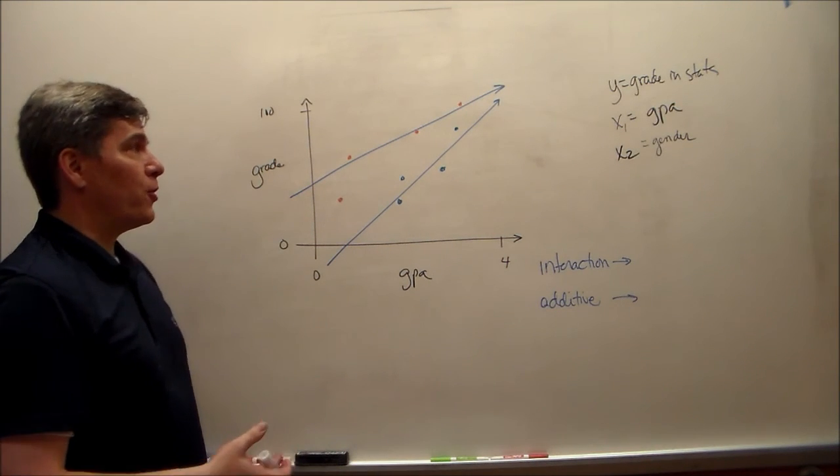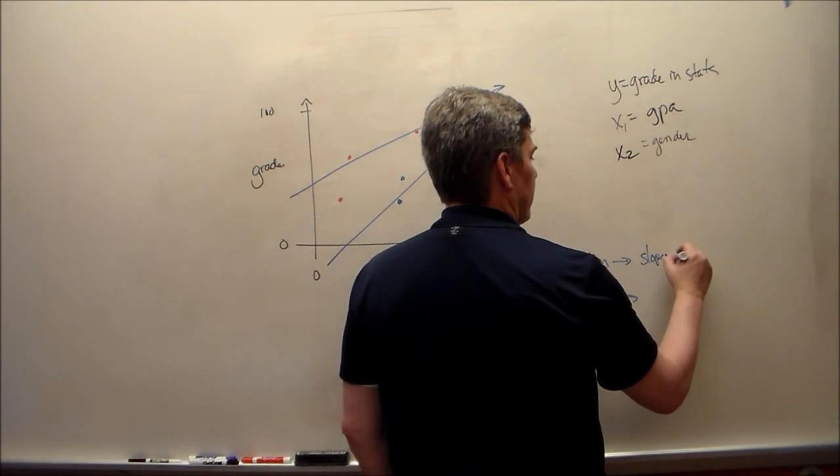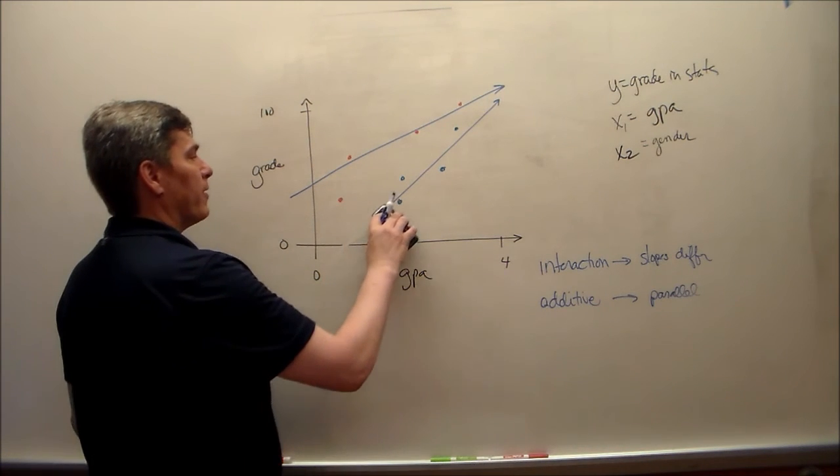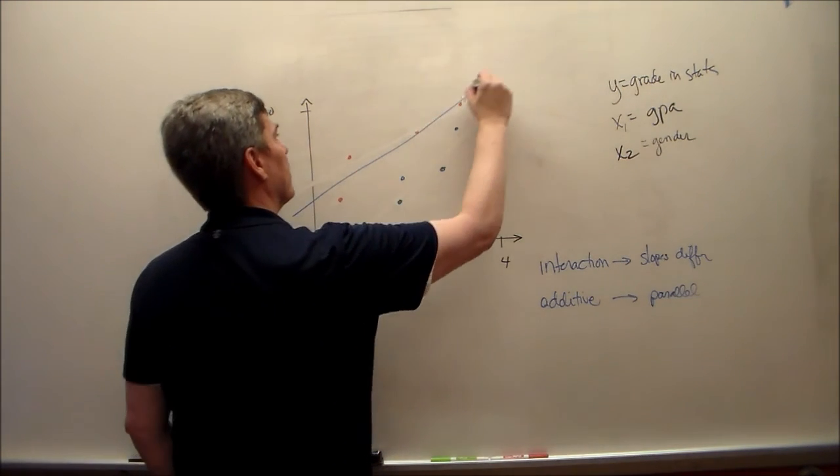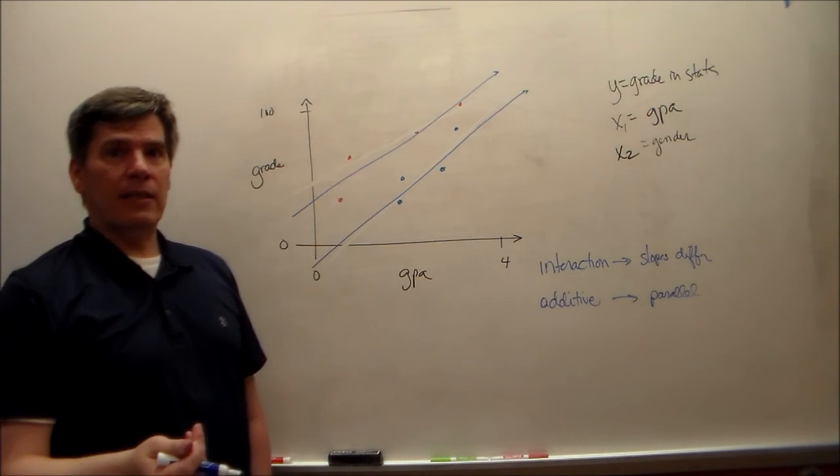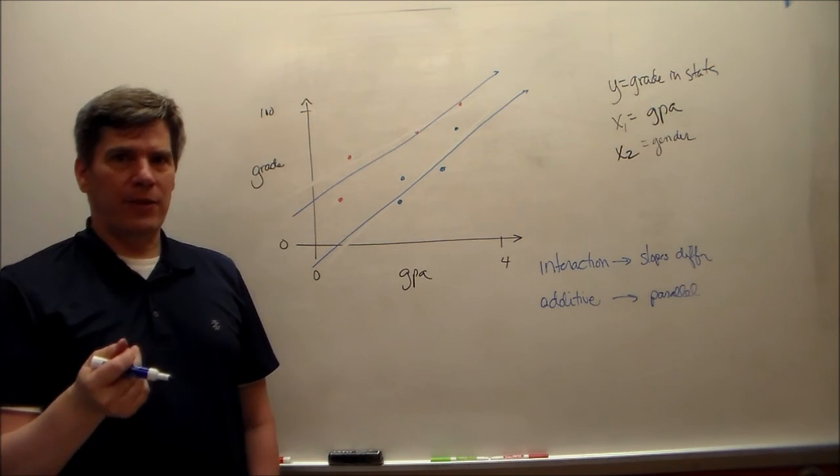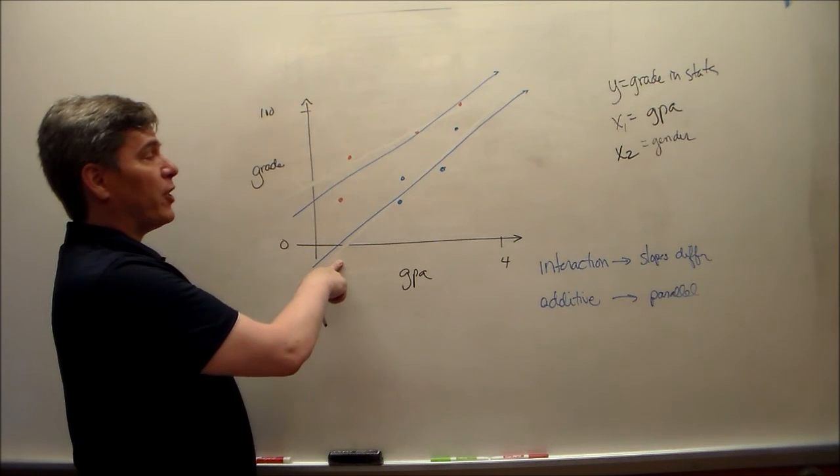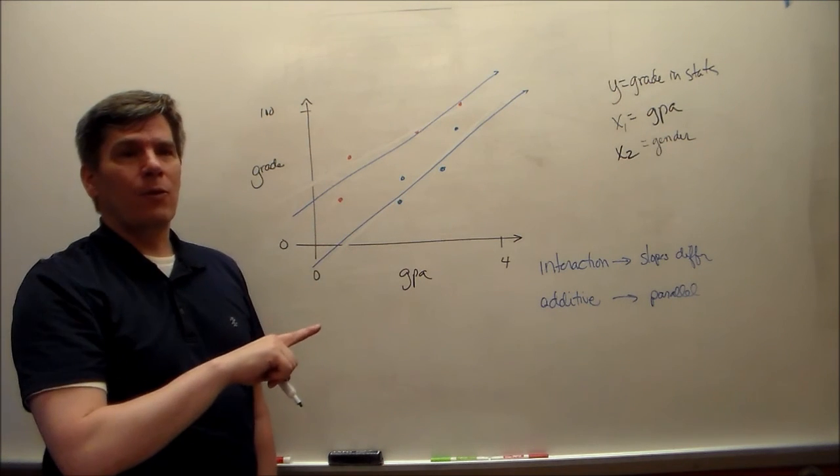If we force this to be an additive model, then those slopes are going to be exactly the same. They're going to be parallel. The effect of GPA on final grade is going to be the same for males and females for an additive model. The effect, that's the slope. If we had an interaction, the effect may not be the same. In fact, the way I had it drawn, the effect of GPA on grade was greater for males than it was for females. Because the slope for males was steeper, was greater than the slope for females.